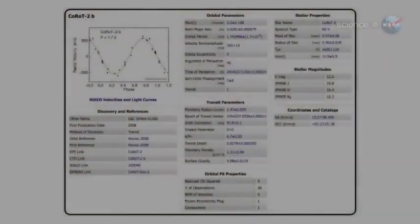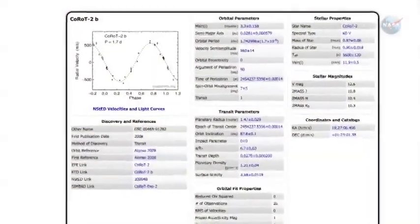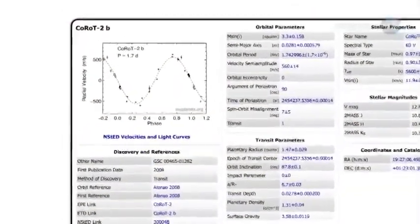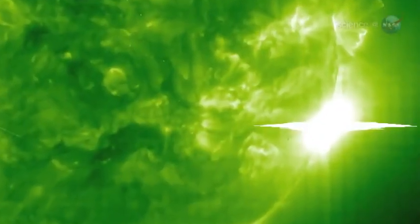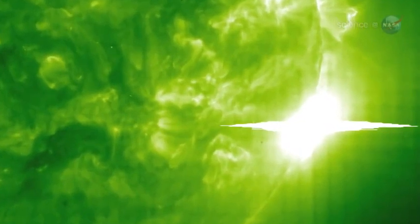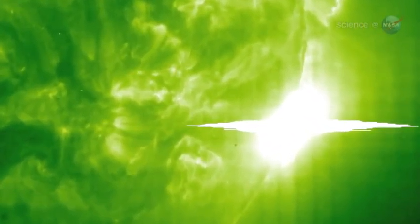On the planet called KORU-2b, it could happen almost every night. Located about 880 light-years from Earth, the gas giant is routinely blasted with X-ray solar flares 100,000 times stronger than anything we experience on Earth.